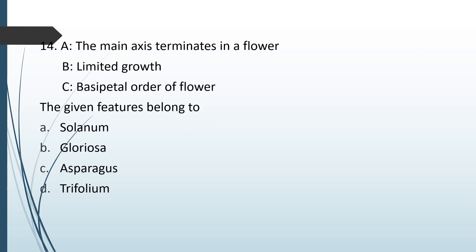A: the main axis terminates in a flower. B: limited growth. C: basipetal order of flowers. The given features belong to: Solanum, Gloriosa, Asparagus, or Trifolium. The correct answer is option A — Solanum.